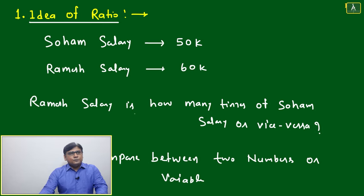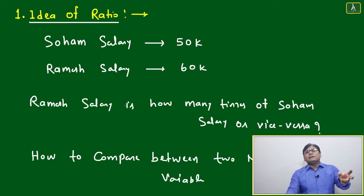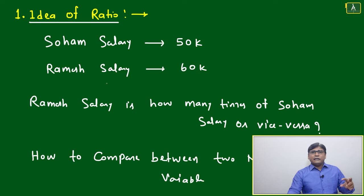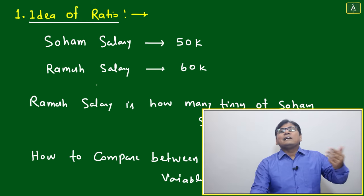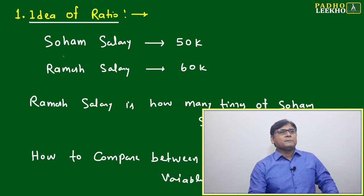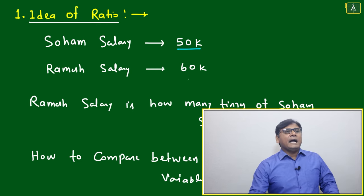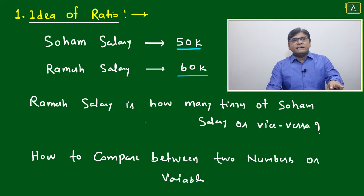We'll try to understand the idea of ratio. I'll emphasize this in a slightly different sense with one example. Generally we compare with salaries — any two friends or colleagues are always worried about how much their salary is more or less than the other's. Suppose Shoham's salary is 50k per month and Ramesh's salary is 60k.